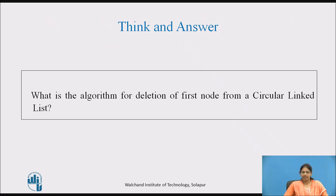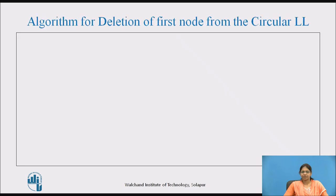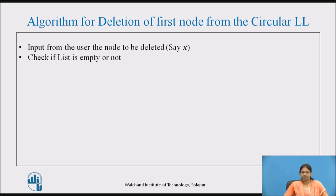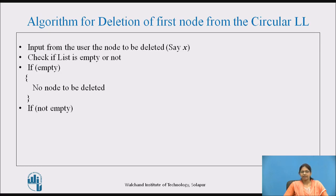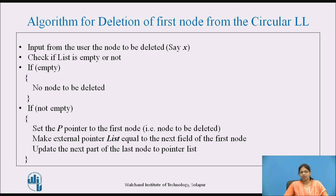Try to think: what is the algorithm for deletion of the first node from a circular linked list? Pause the video and note down the answer. Algorithm: Input from the user the node to be deleted, say x. Check if the list is empty. If empty, print no node to be deleted. If not empty, set pointer p to the first node, make the external pointer list equal to the next field of the first node, and update the next part of the last node to the pointer list.